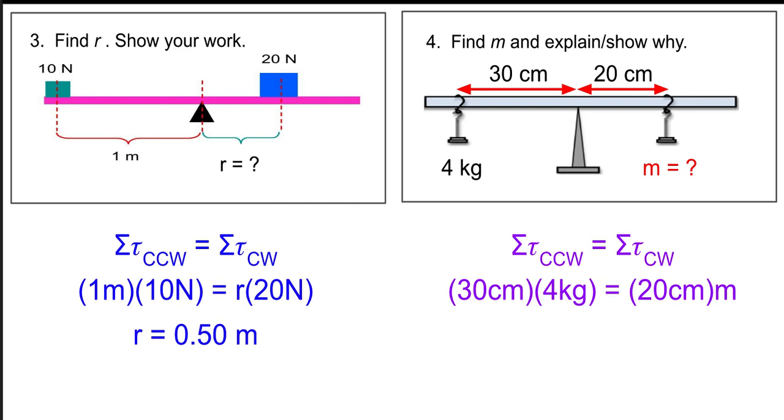So on the left, 30 times 4. And on the right, 20 times an unknown mass. And I get 6 kilograms. Now, I do usually keep my units in my work with these sorts of questions, just because I want to make sure I put the same type of units on both sides of the equation. I don't want to mess that up.